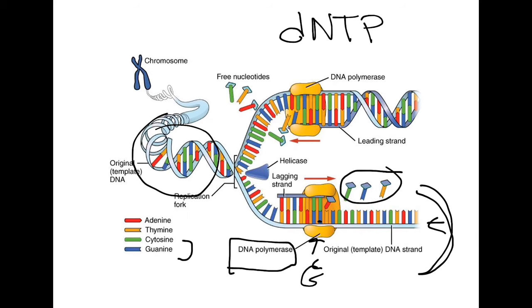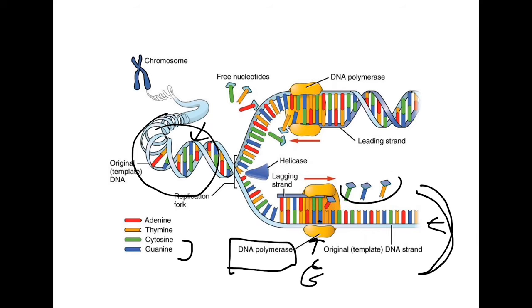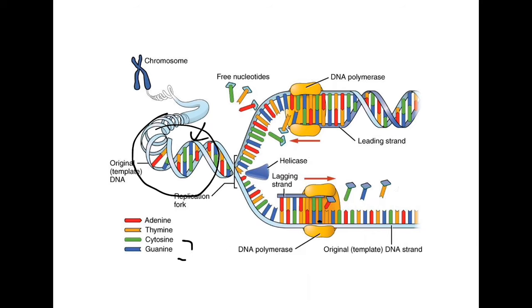Another key player is helicase. Helicase is really important because it has to unwind and unzip the DNA in order for it to get replicated — if it's closed, nothing can happen. There are two different strands in replication: the top strand is known as the leading strand and the bottom is the lagging strand. The orientation of the parent strand drives some of the differences we see between the two.